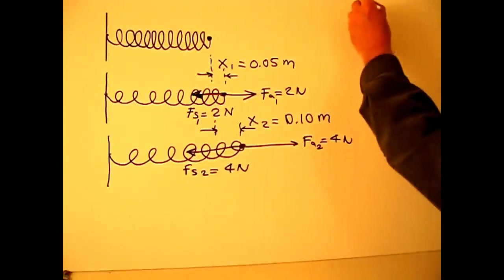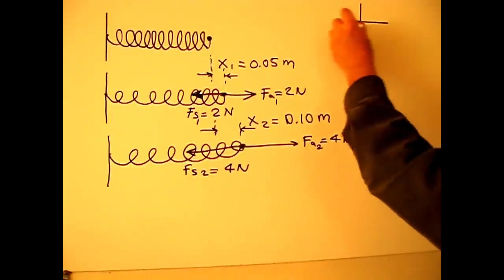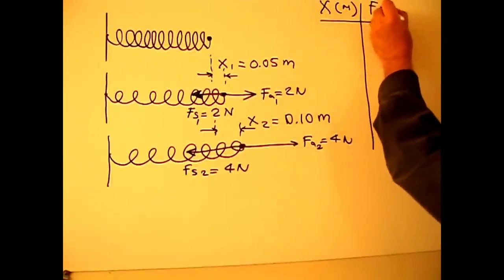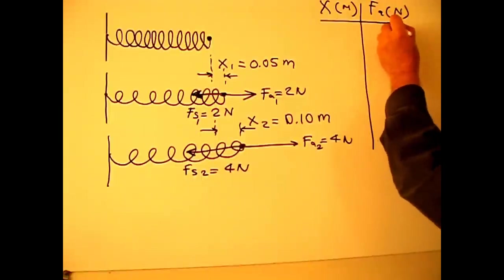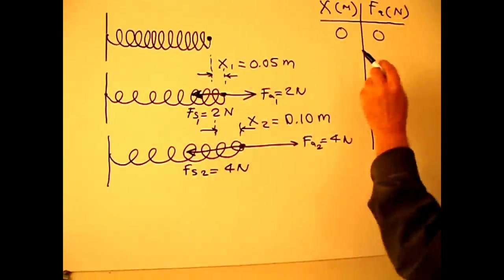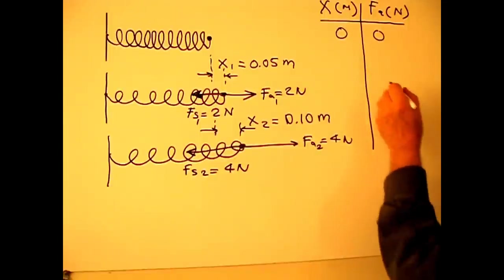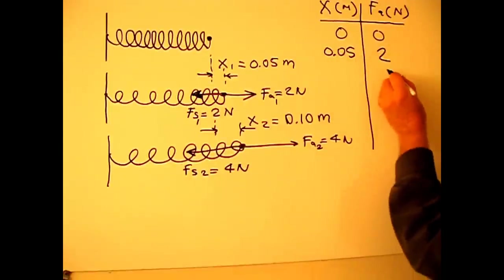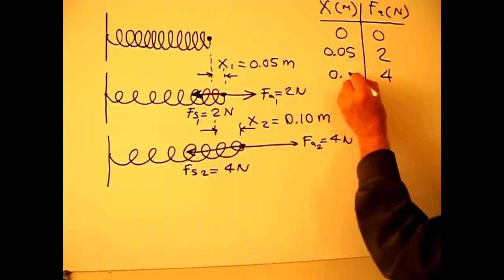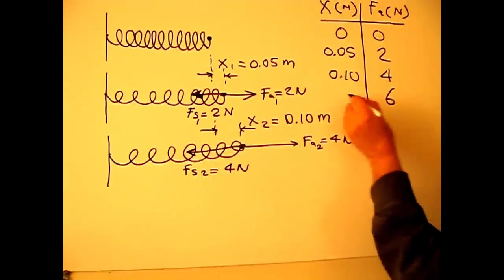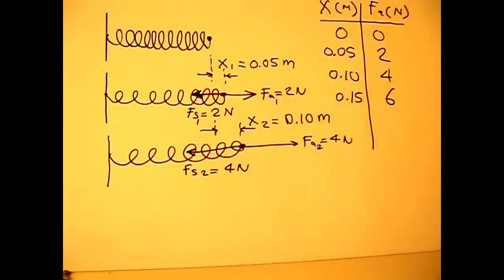Let me put those values on a table. This is x meter displacement. This is F applied newtons. 0 newton, I didn't apply any force, so displacement is 0. 2 newtons, 0.05 meters. 4 newtons, 0.10. Let's say I did force 6 newtons, I get 0.15.